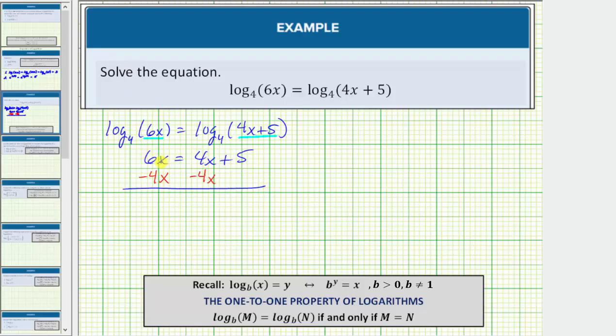Simplifying, on the left, 6x minus 4x is 2x. We have 2x equals, on the right, 4x minus 4x is zero, giving us the equation 2x equals 5.